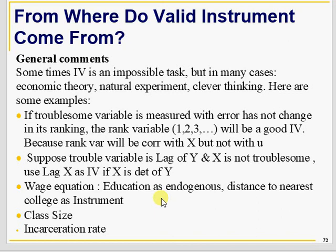If X is a determinant of Y in a wage equation, you may use distance to the nearest college as an instrument, because more education leads to more earnings. However, education is also linked with ability — ability leads to more education — and ability is not related to the instrument. Similarly, you can use class size as an instrument.